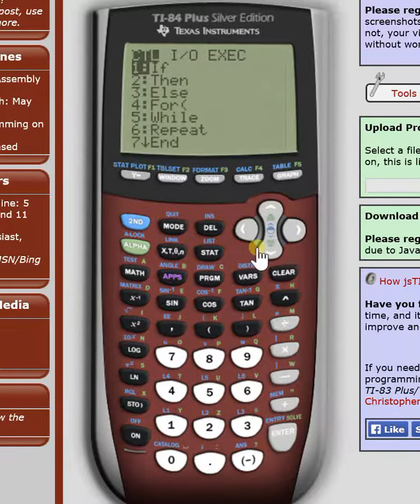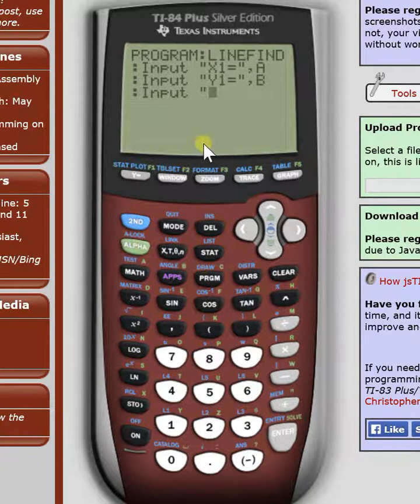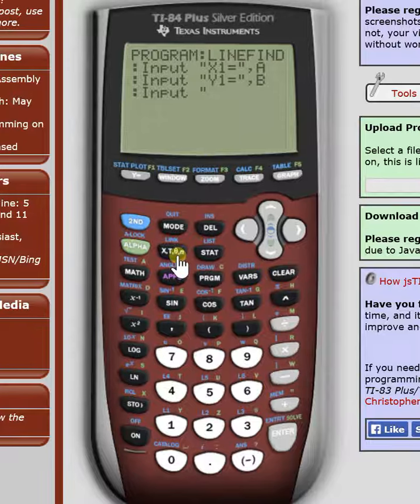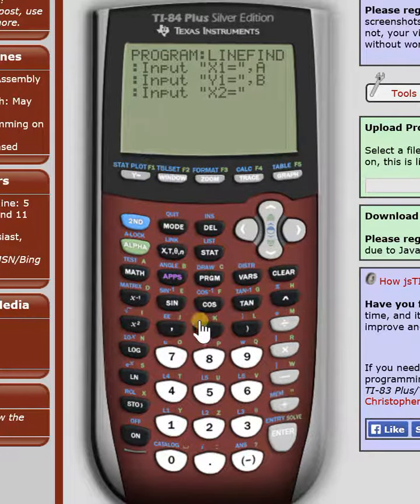So now we can do it again for the next coordinate pair, alpha quotations, x2 this time, second math, enter, quotations, comma, c.